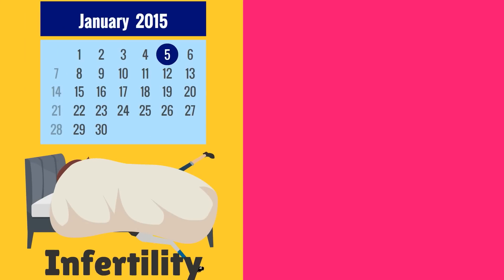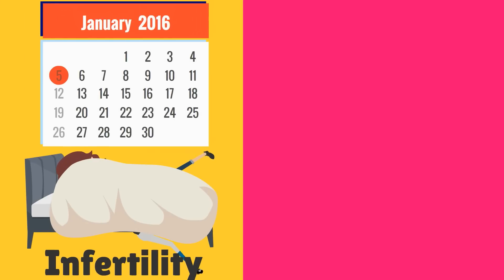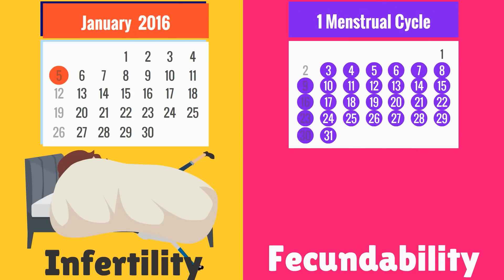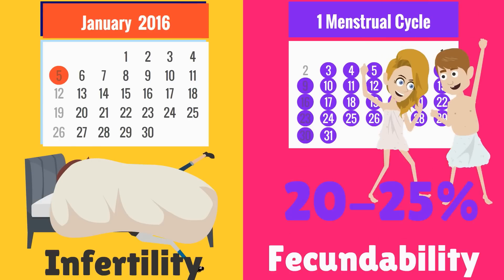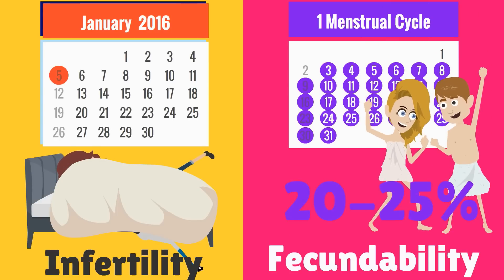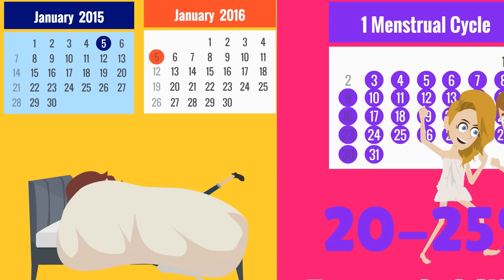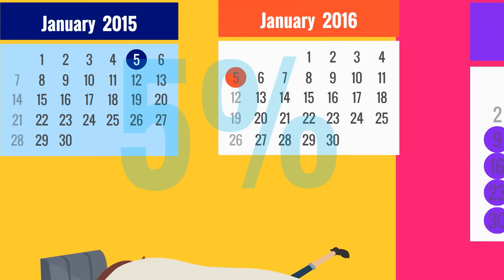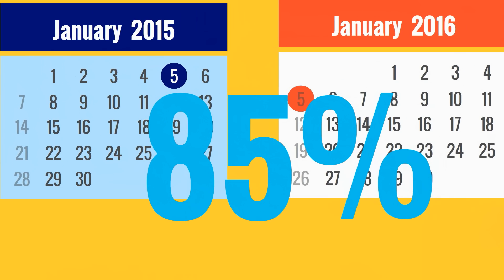Let's start with some basic definitions. Infertility is defined as the failure of a couple to conceive after 12 months of frequent unprotected intercourse. Fecundability is the probability of achieving a pregnancy in one menstrual cycle, estimated to be 20 to 25% in healthy young couples. After 12 months of unprotected intercourse, 85% of couples will achieve pregnancy.